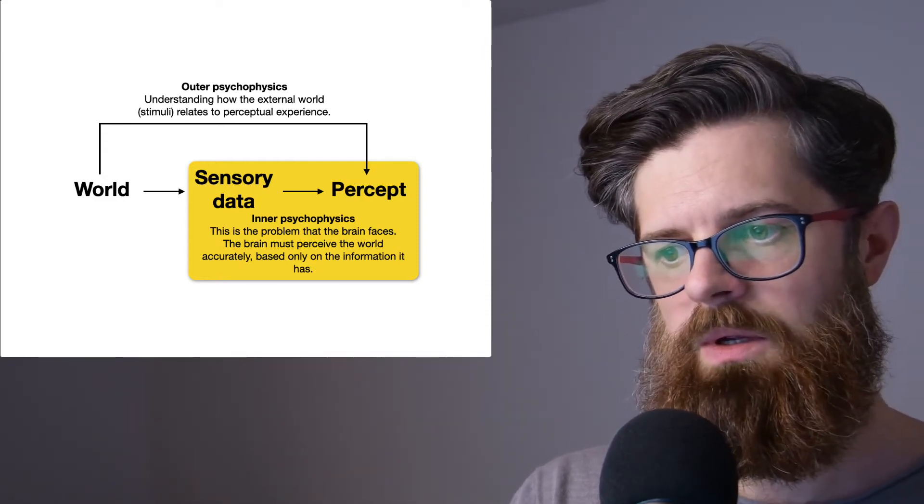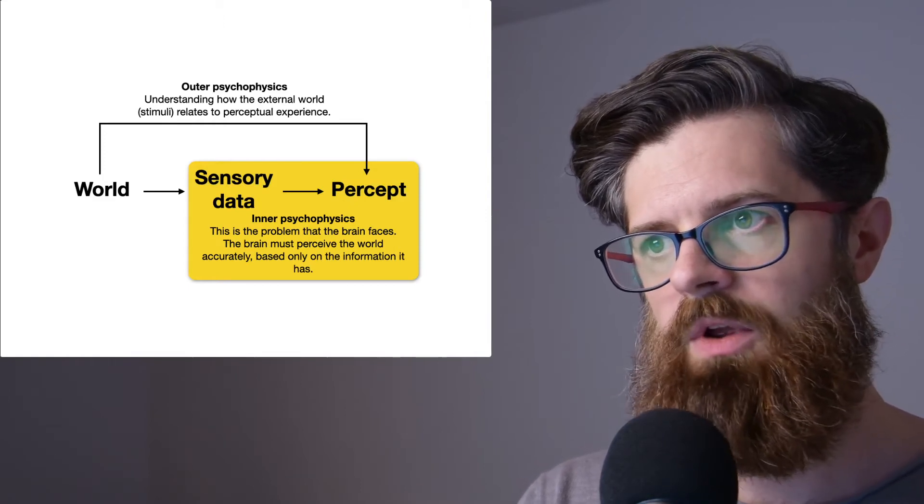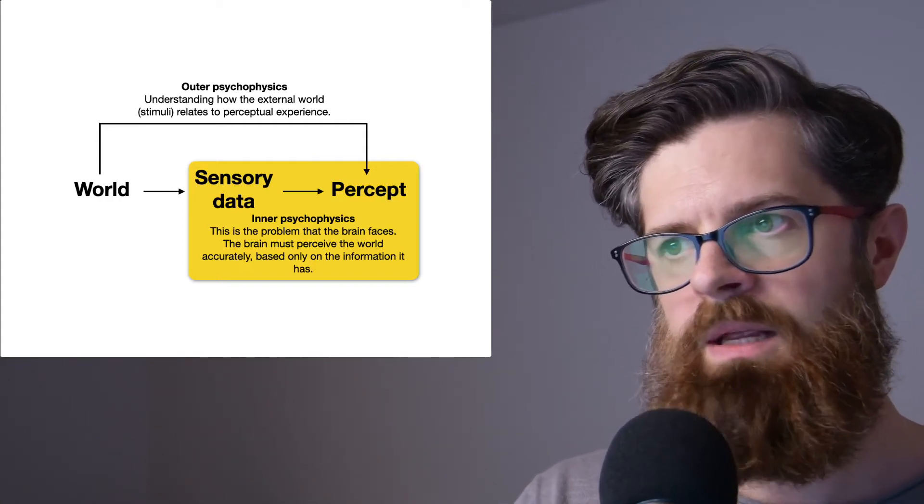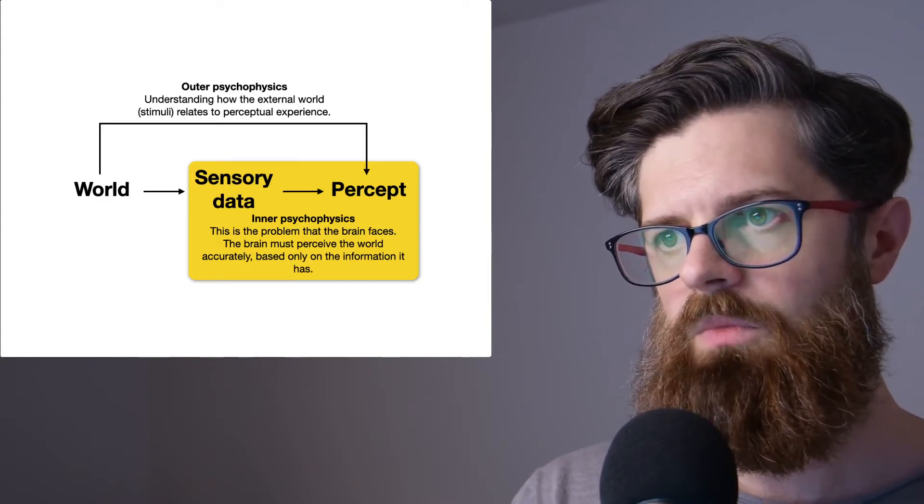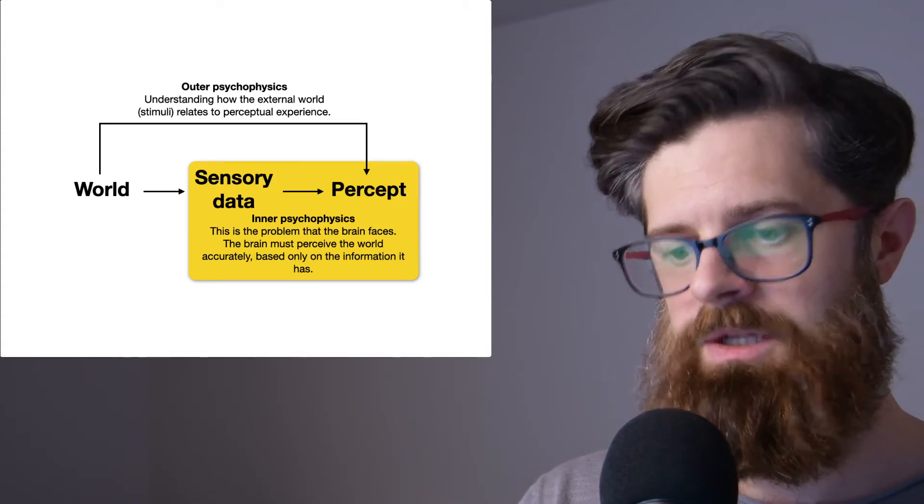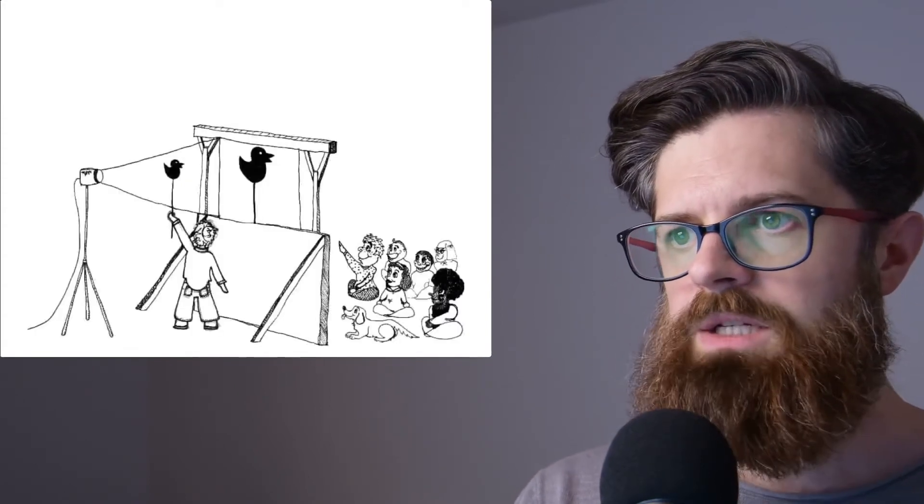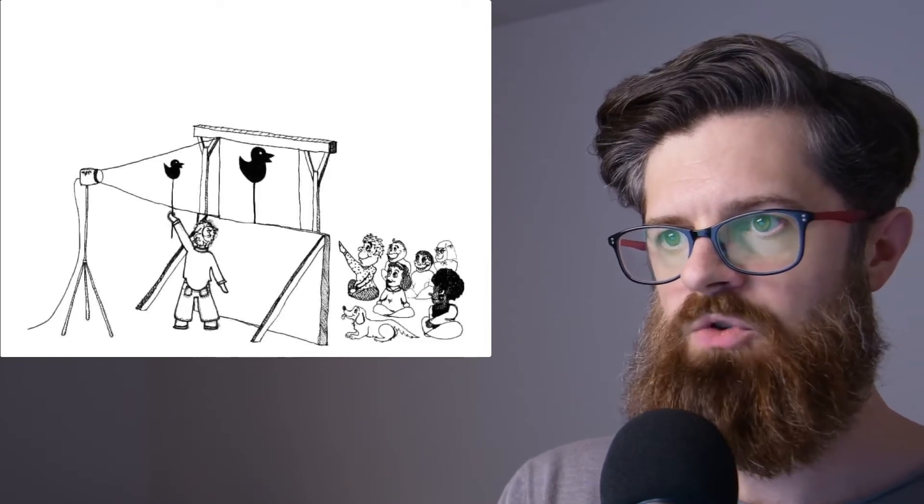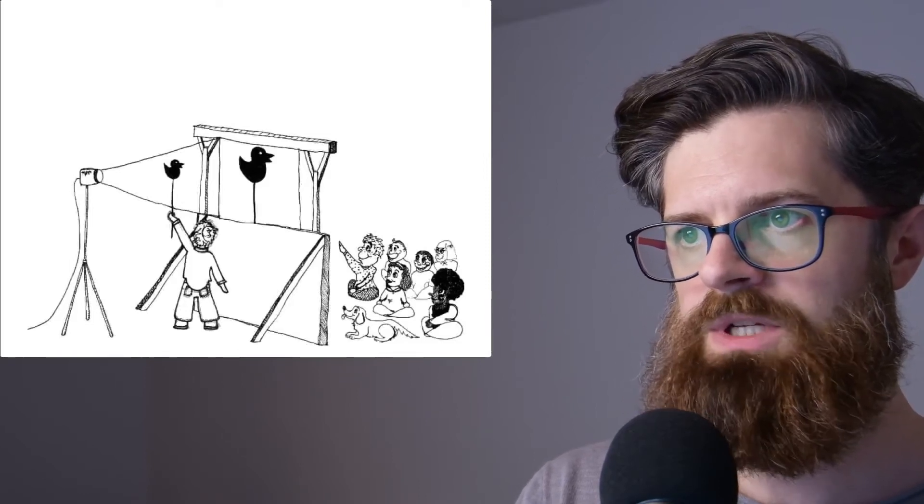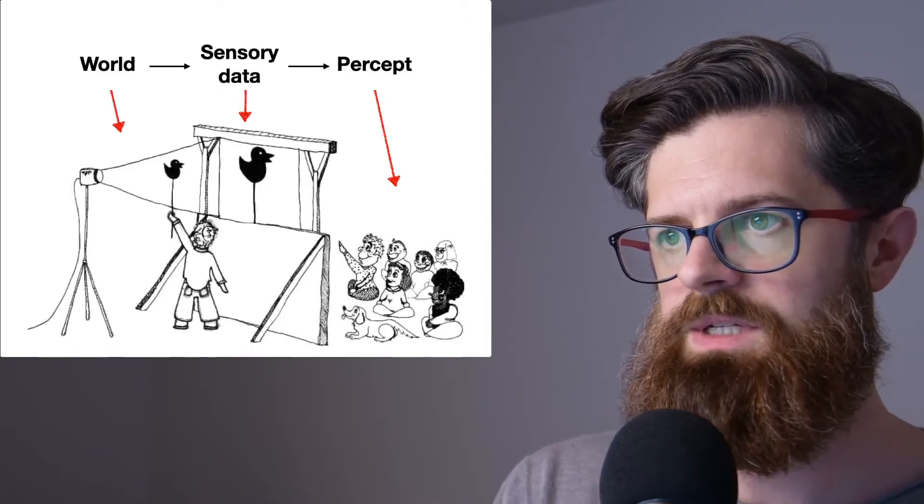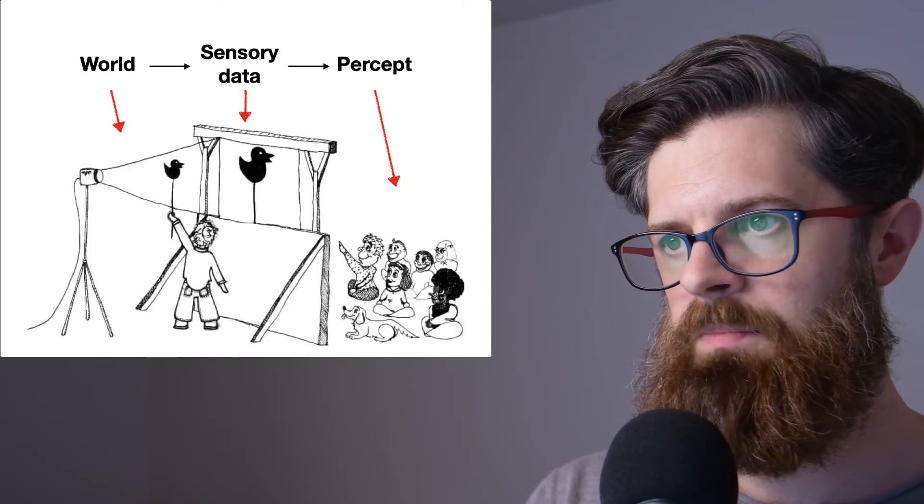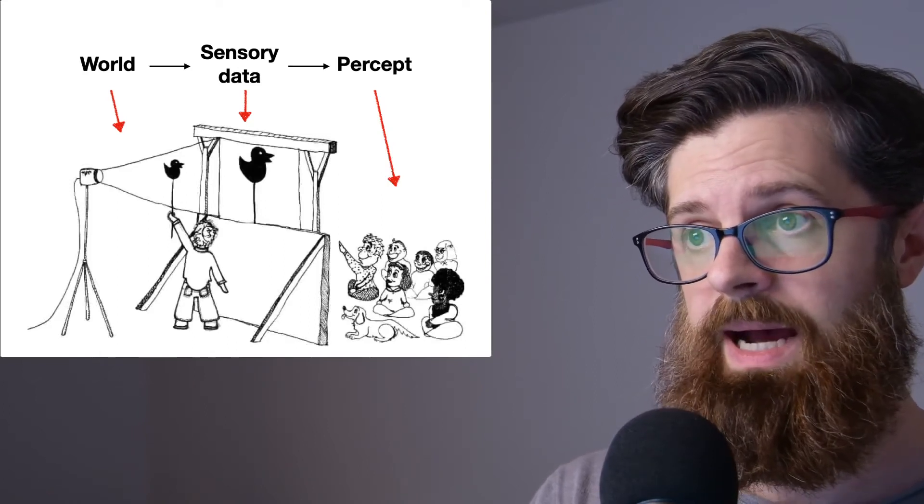You might be able to look at the world or even touch things in the world, but what is it that your brain is really getting? Is it a direct contact or direct measurement of the world, or is it via sensory data? This is the issue of inner psychophysics: how does the brain result in a perceptual experience based upon sensory data? Here is a pictorial demonstration. We've got a bunch of people here looking at a silhouette which is projected onto the screen. This is an analogy.